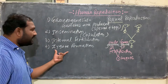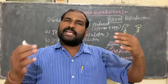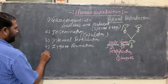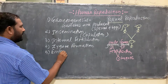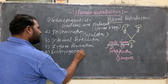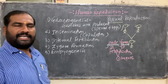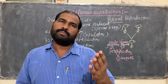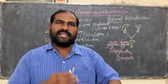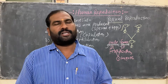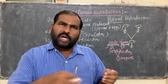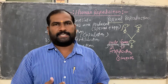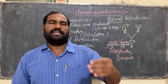After fertilization and zygote formation, the next step is embryogenesis. Embryogenesis means the complete development of the embryo from the zygote. The zygote divides and re-divides, resulting in the formation of an embryo. All the steps occurring from the zygote to the formation of the embryo constitute embryogenesis.